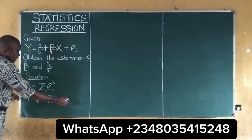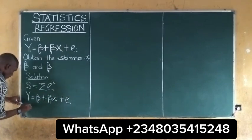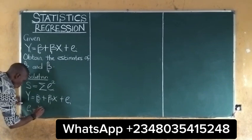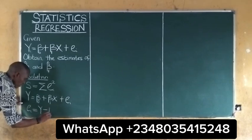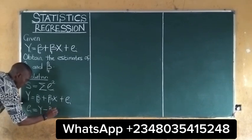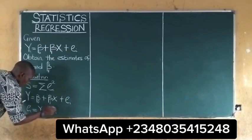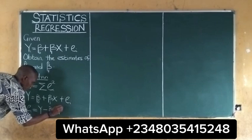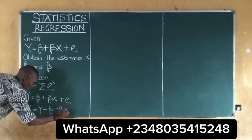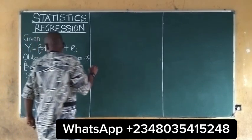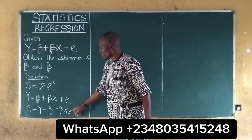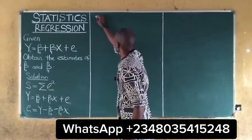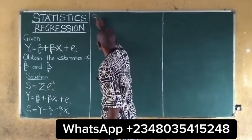we can make the error term the subject. The error term will be equal to Y minus B0 minus B1*Xi. So, all we need to do is to substitute the error term into the standard error expression. If we do that, we'll have something like this.